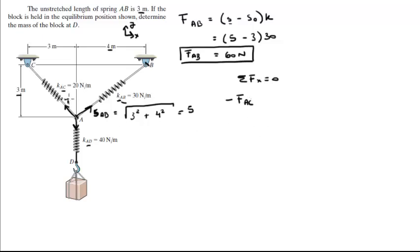The force of AC and the force of AB minus the force of AC times the cosine of this angle right here. Let's call this angle theta. Theta is easily found by doing the tangent inverse of the opposite, which is 3, over the adjacent, which is 3. So theta is equal to 45 degrees.